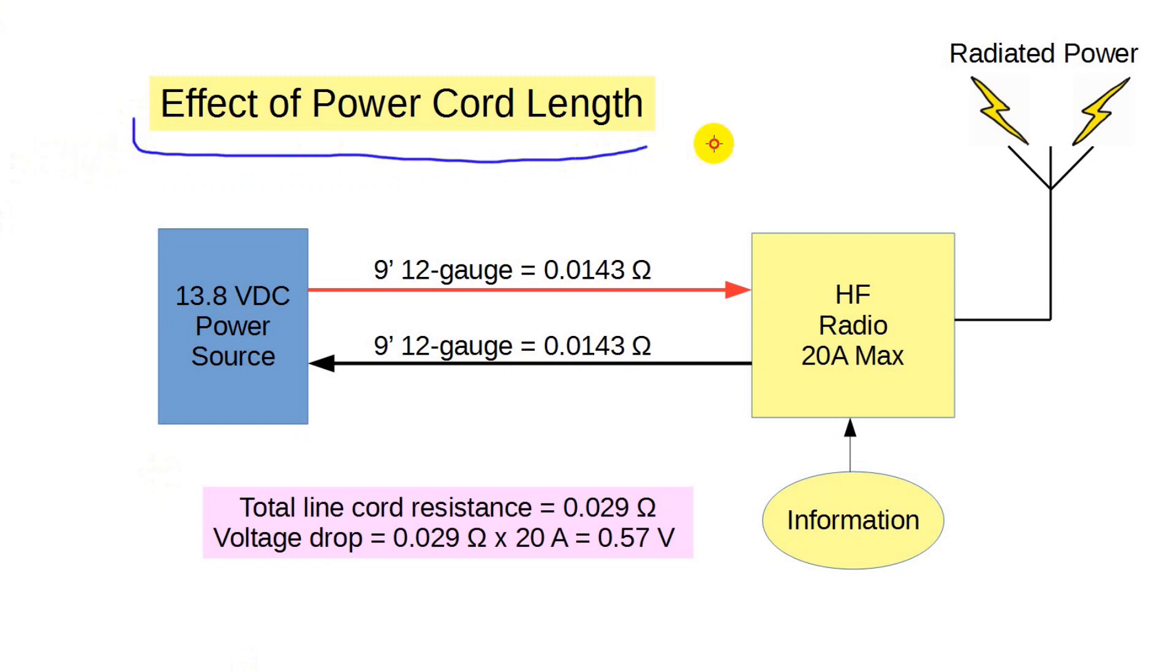First, let's look at the theory. The wire is 12 gauge, which is pretty thick. Now, according to the ARRL handbook, 12 gauge wire has a resistance of 1.588 ohms per thousand feet. We're dealing here with only nine feet, so that's 0.0143 ohms one way. Of course, we get that on the return leg too, so the total resistance in the wire is 0.029 ohms. That doesn't sound like much, but at 20 amps, that's about six-tenths of a volt.